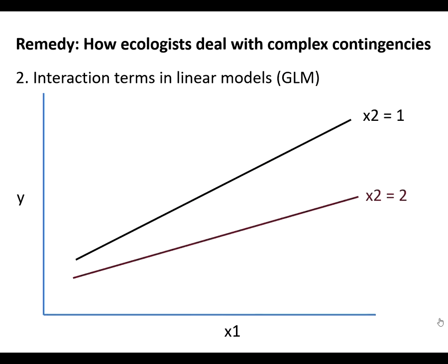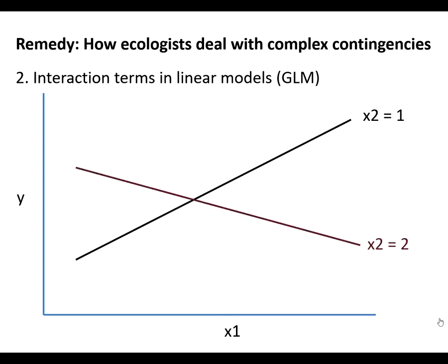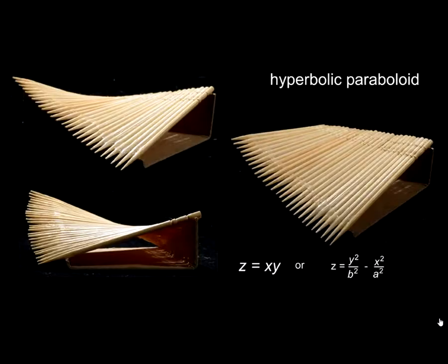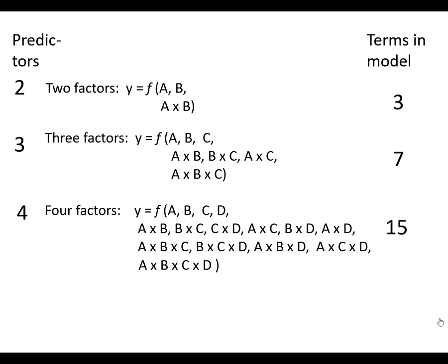Second, we can attempt to include all of the important factors in a linear model. An interaction term looks like this: the relationship between x1 and y is modified by another variable, x2. In a more extreme example, x2 might reverse the slope of the relationship between x1 and y. In three dimensions, the response surface for an interaction of x1 and x2 on y looks like this. Linear interaction terms construct a curved surface from straight lines, forming a specific, limited range of shapes — all of them hyperbolic paraboloids. The number of interaction terms goes up very steeply with the number of factors in a model and quickly becomes overwhelming and difficult to interpret.